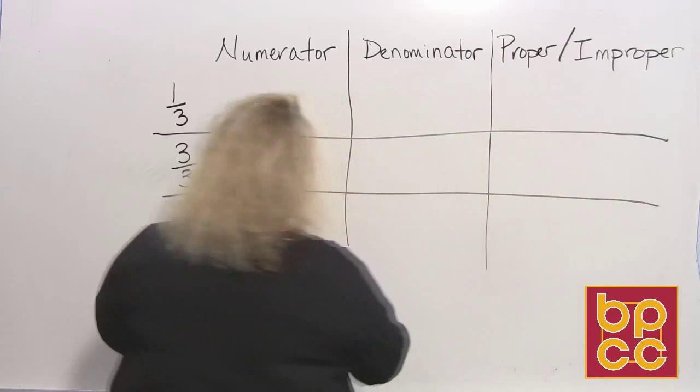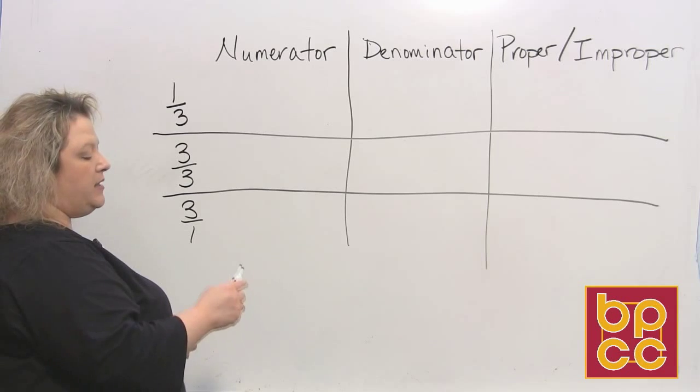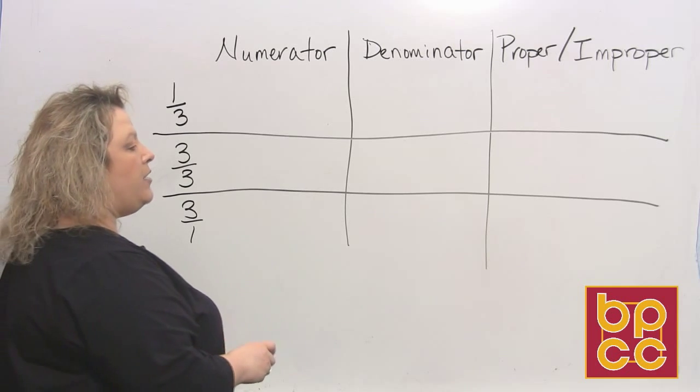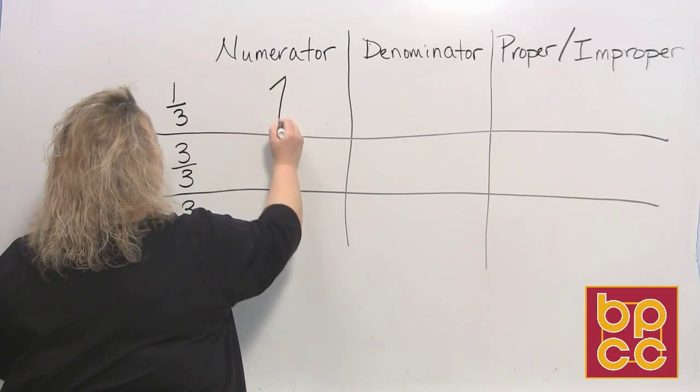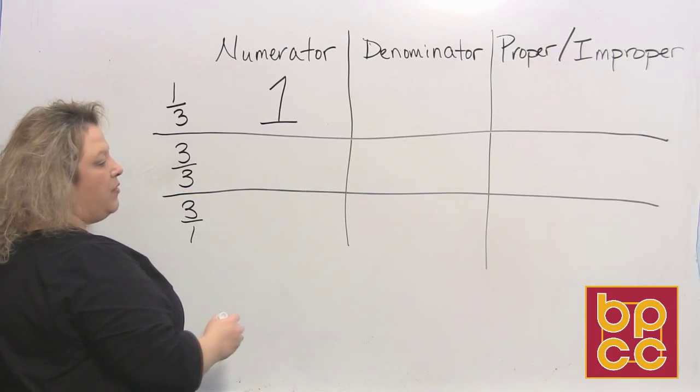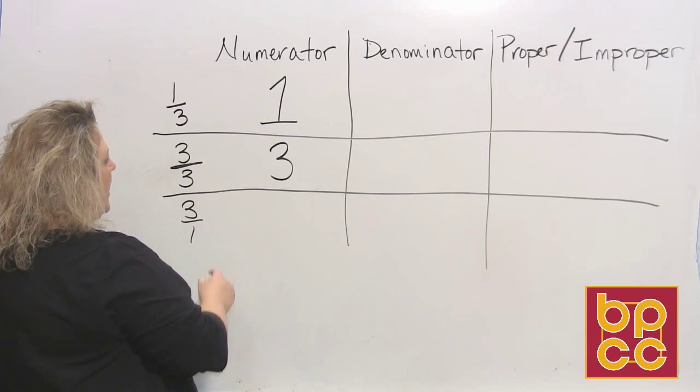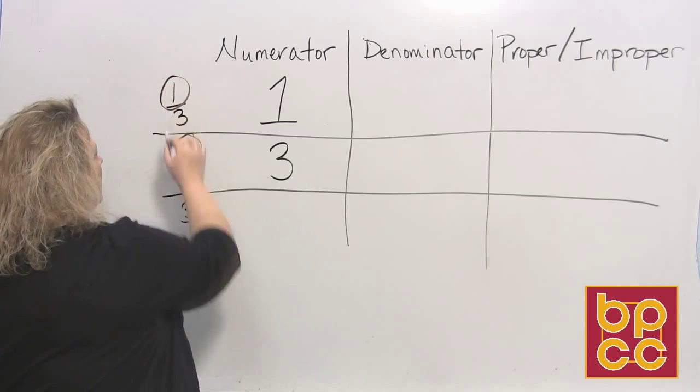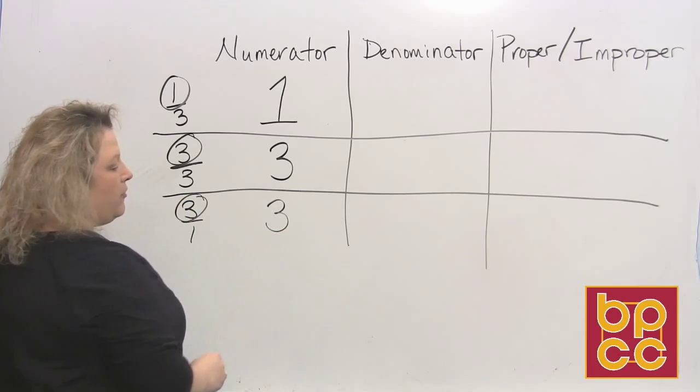So on the board, we see our first fraction. It says the fraction one-third. To identify the numerator, the numerator is the number on top of the fraction bar, so that would be the digit one. In the second fraction, the numerator would be the digit three that's on top. And in the bottom fraction, the three is also the numerator.